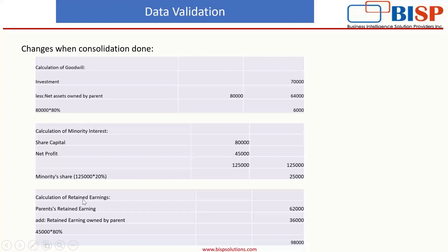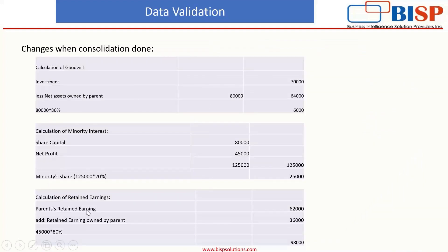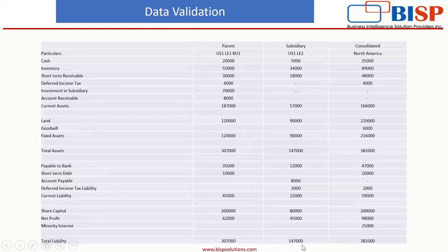For the calculation of retained earnings: net profit of the parent is 62,000 and of the subsidiary is 45,000. 100% of the parent's retained earnings is 62,000, and the parent's 80% share of subsidiary retained earnings is 36,000. Adding them gives 98,000. So in our consolidated balance sheet: goodwill is 6,000, share capital is 2,00,000 (100% of parent), net profit is 98,000, and minority interest is 25,000. Total assets and total liabilities both equal 3,82,000.